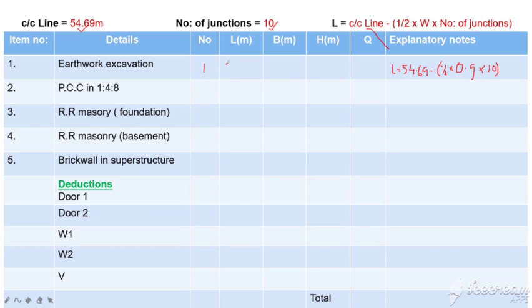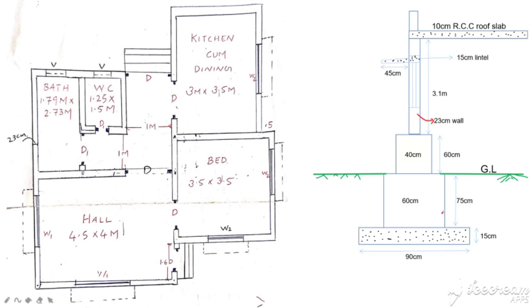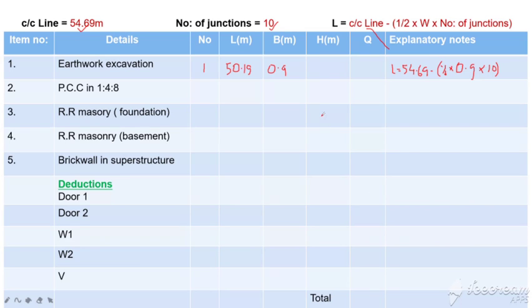The length we calculate is 50.19. The height is 0.75 plus 15 ground level, which is 75 plus 15, that is 90 cm, so 0.9 m.